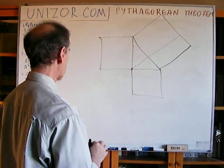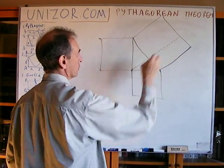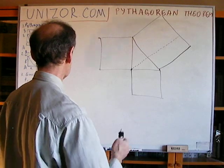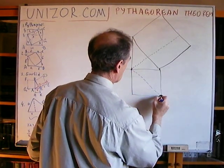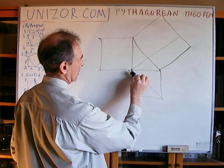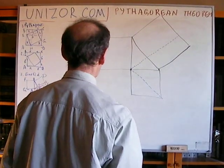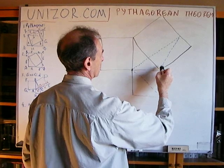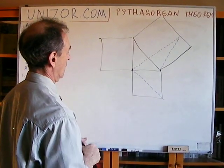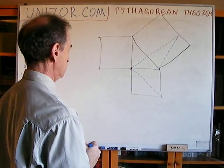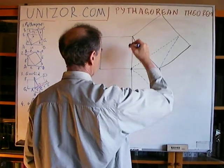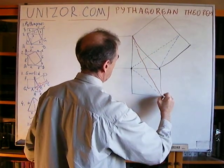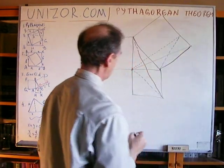Instead of proving that the whole square equals the whole rectangle, I suggest using the following: I will use half of this square, which is this triangle, and prove that its area is equal to half of this rectangle, which is this triangle. Let me use another color. Let's connect this vertex to this one, and this to this.